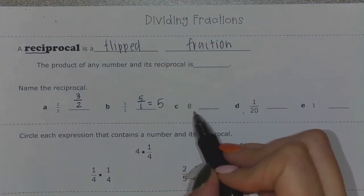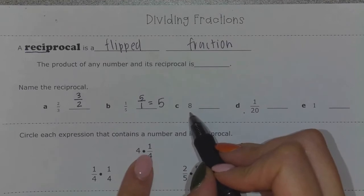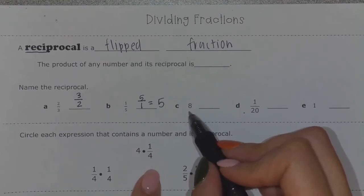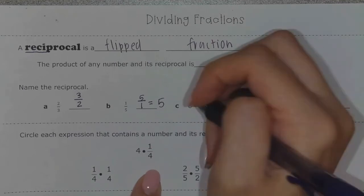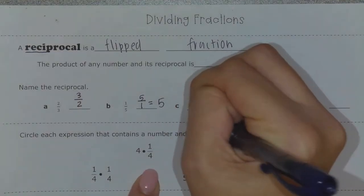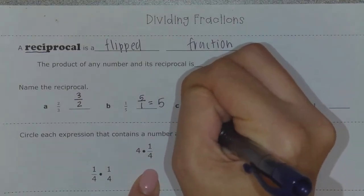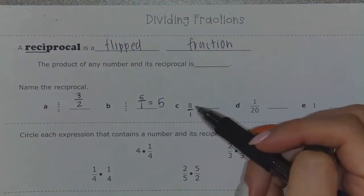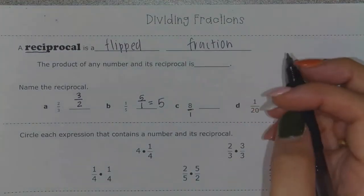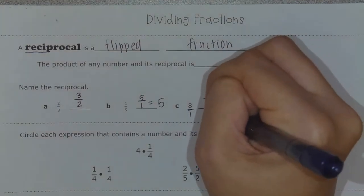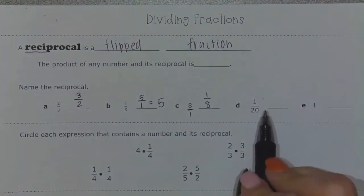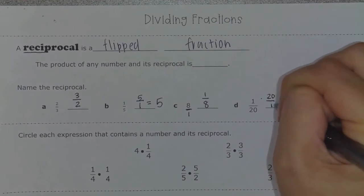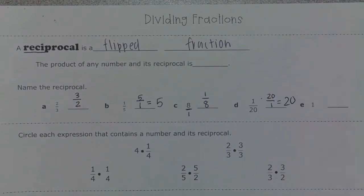The reciprocal of the number eight — in order to flip a fraction, it has to have a numerator and a denominator. Every single whole number in the world has a denominator of one. So if I flip eight over one, it would become one-eighth. The reciprocal of one-twentieth would be 20 over one, which is just simply 20.